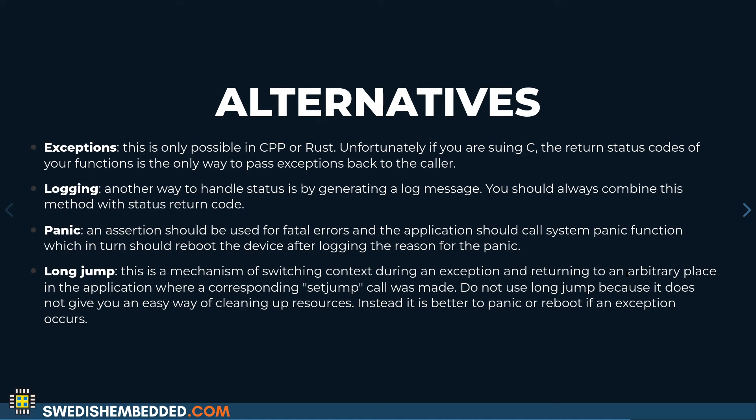Some alternatives to return value codes include exceptions — if you have them available. In C, we don't have exceptions in the same way as other languages. We have things like setjmp and longjmp in C, but those don't unwind the stack, so there is no proper way of handling propagation of an error up the call stack. Logging is another alternative — when we have an error, we log it before returning the status code, which helps you debug the application.